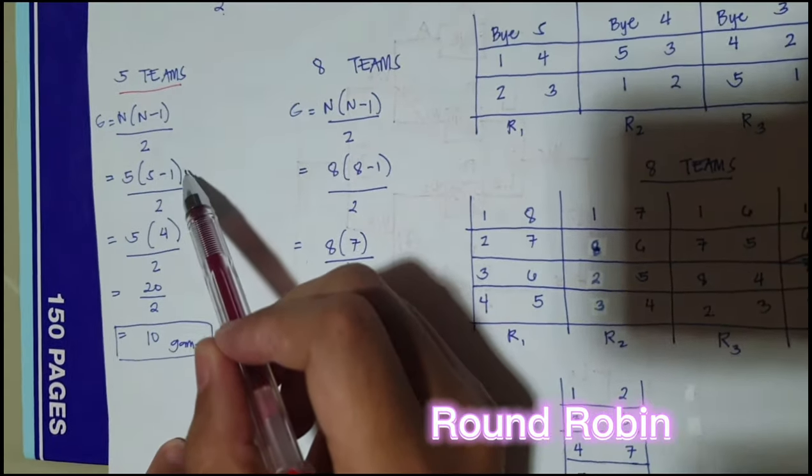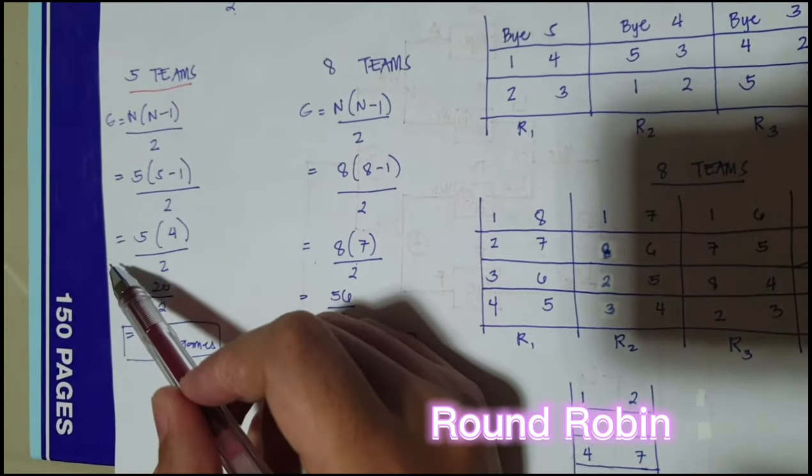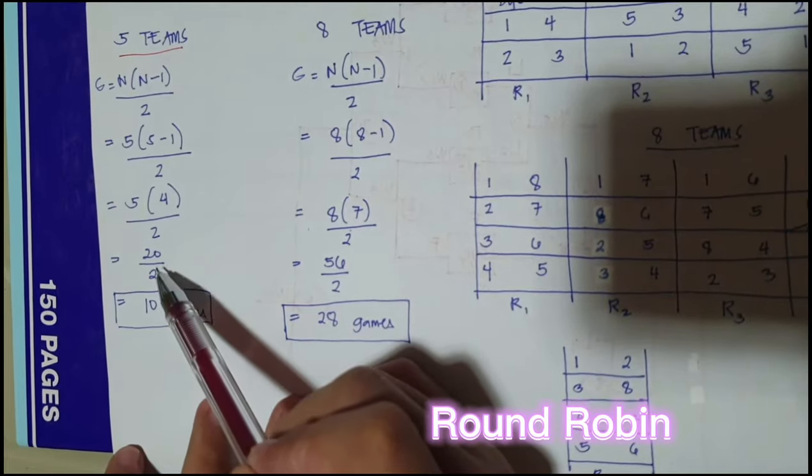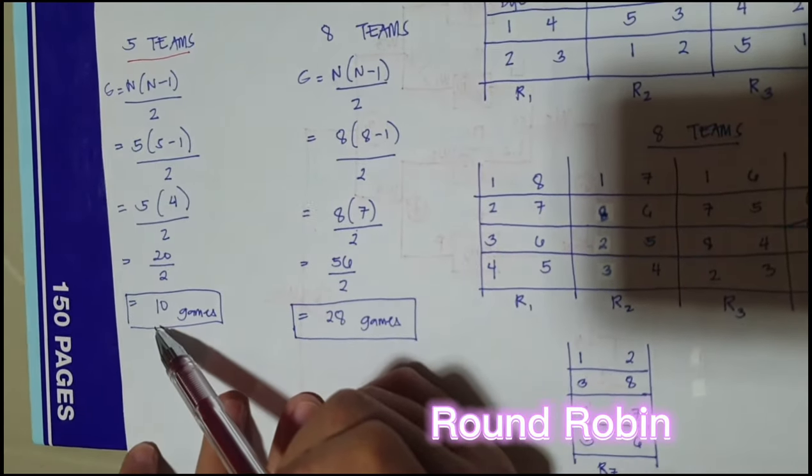So 5 times 5 minus 1 over 2. So 5 times 4 over 2. So 20 over 2 equals to 10 games.